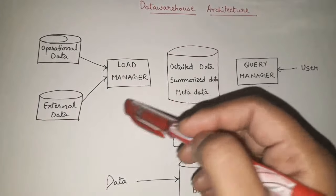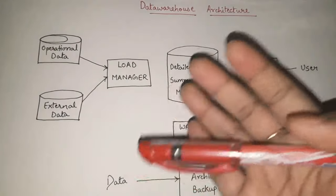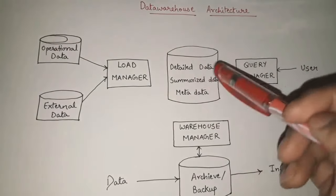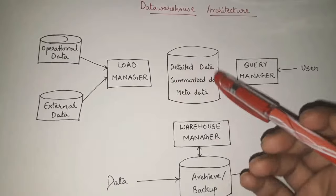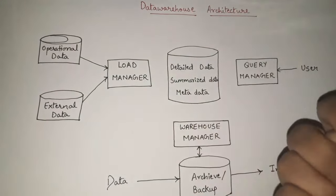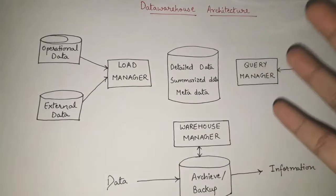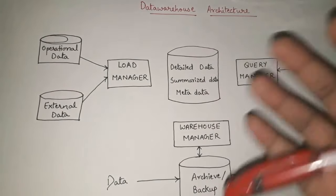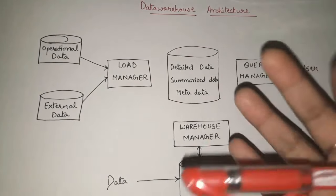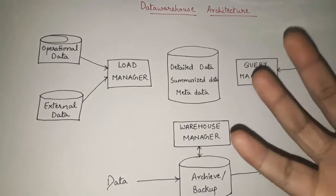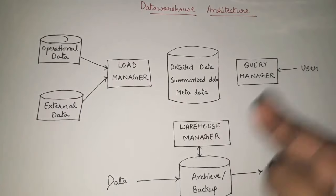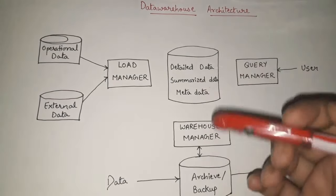After loading and transforming the data, we get three types of data in our data warehouse: detailed data, summarized data, and metadata. Detailed data means all the complete bulk of data with every detail. Summarized data means taking the summary or the important main points extracted from the detailed data.